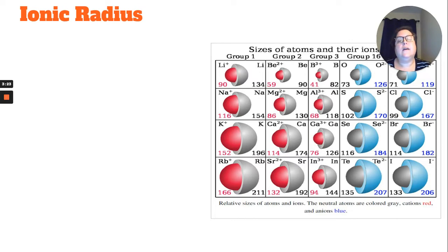Ionic radius is kind of related to atomic radius because you have that parent atom, what it is when it's neutral, and then you have to look at what happens when you gain or lose electrons.